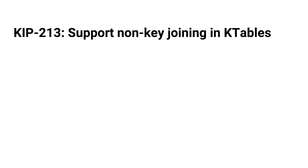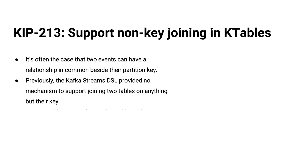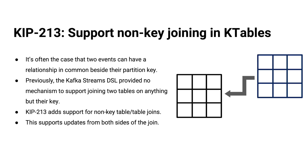That does it for Kafka Connect. Now let's look at Kafka Streams. First is KIP 213: support non-key joining in KTables. Prior to this KIP, any kind of join — stream-stream, stream-table, or table-table — required a common key, and the message key of the underlying topics had to be the same. You might have to do a little repartitioning or re-keying to get a join to work. With this KIP, we now have the ability to join on non-key fields just in KTables — this doesn't affect table-stream or stream-stream joins. But if you're joining tables, you can use a key that's just a field in the value and still make that join work.